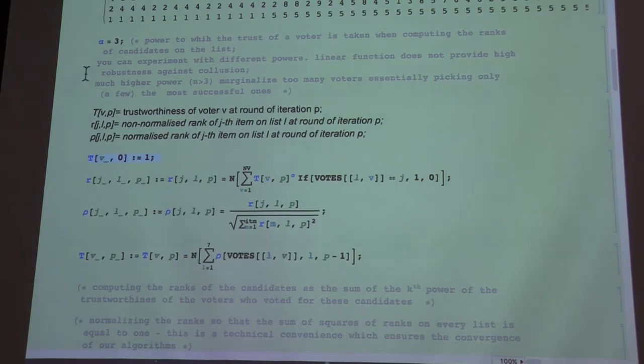Increasing alpha increases the robustness of the schema against pollution, but also increasingly marginalizes voters that are not completely compliant with the sentiment. So for practical applications, you have to choose appropriately alpha. And in the experiments that my student ran, alpha between 2 and 3 was a very good choice.